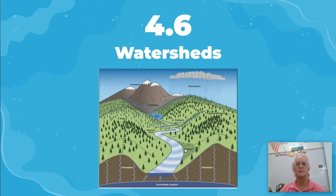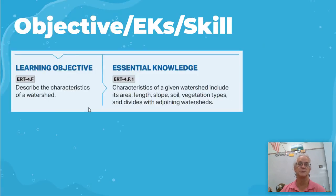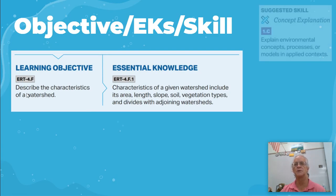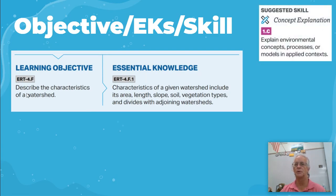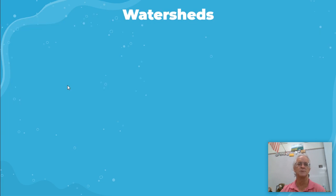Hello. Today we're covering the 6-unit, Unit 1, which is called APU 4.6, about watersheds. The objective here is to describe the characteristics of a watershed. If you're doing an FRQ about it — hint, hint — you're going to be explaining the environmental concept, process, or models of applied concepts.